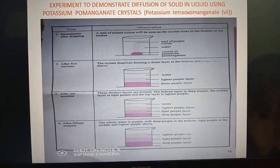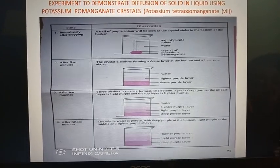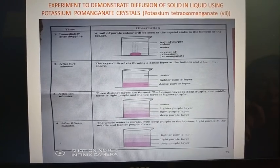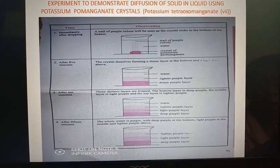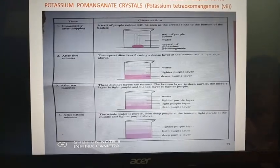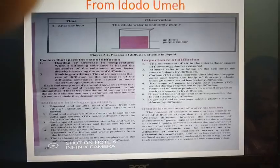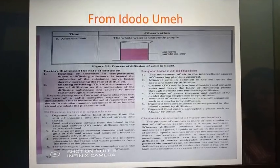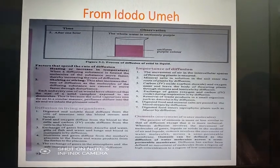Then after about ten minutes, you will see more layers: a deep purple layer, a light purple layer, a lighter purple layer, and you still see clear water. Then after about twenty minutes or one hour, you would notice that the whole water has been colored purple, meaning that equilibrium has been reached.